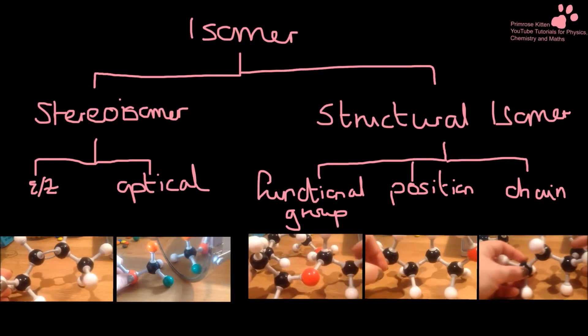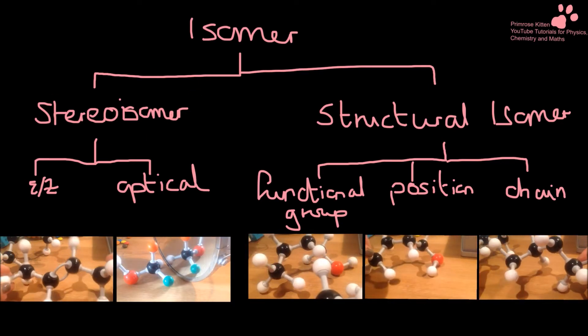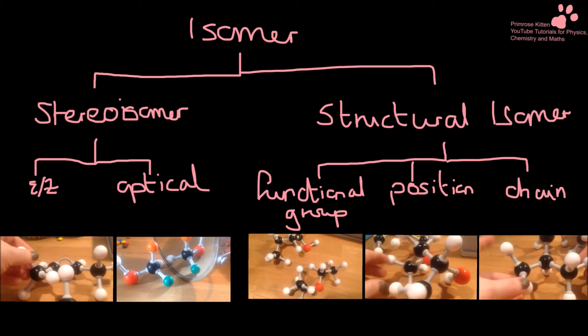There are many different types of isomerism, and in this video we're going to be looking at stereoisomerism. So EZ and cis/trans, which is a subset, and then a little bit at the end about optical isomerism.